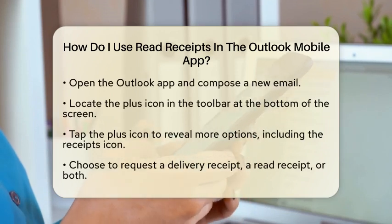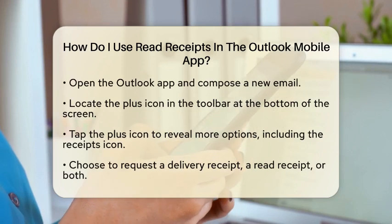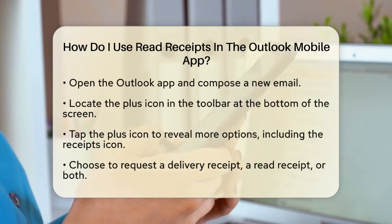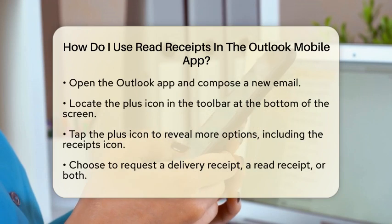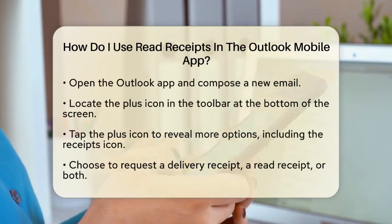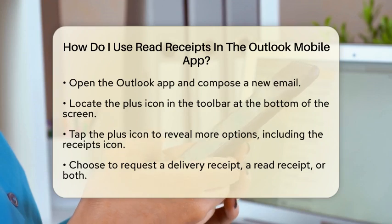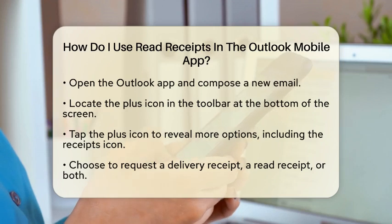Next, open the Outlook app and start composing a new email. Once you have your message ready, look for the plus icon in the toolbar at the bottom of the screen. Tapping this icon will reveal more options. From there, select the receipts icon.